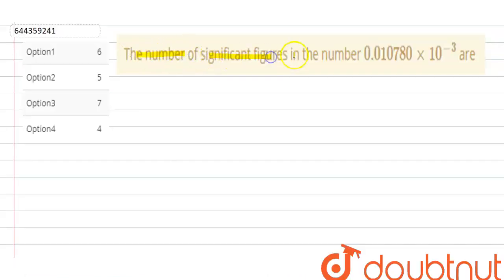The number of significant figures in the number 0.010780 × 10^-3. So this question is based on the chapter units and measurement.